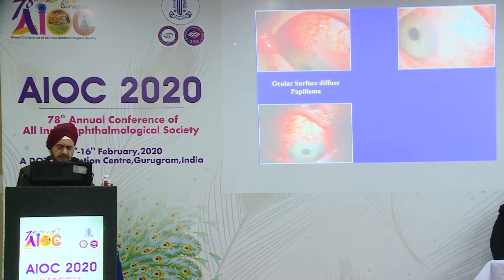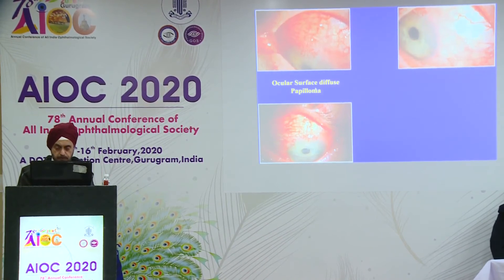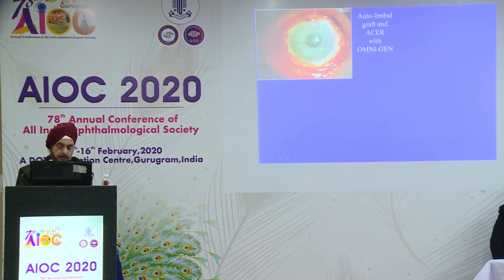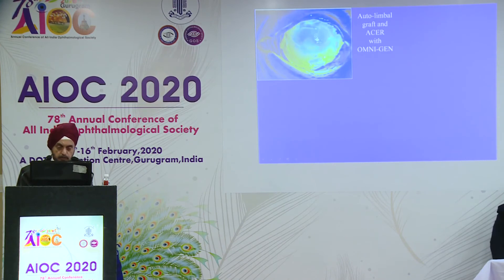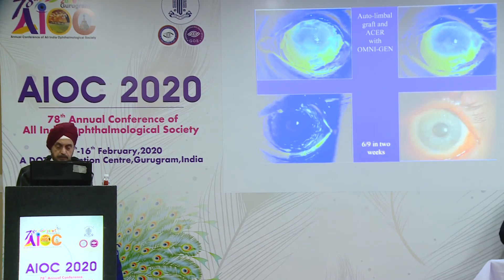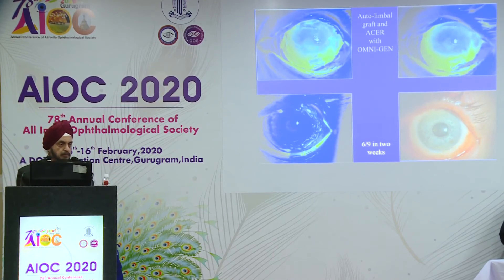Here's a patient with a very severe extensive ocular surface papilloma, treated with mitomycin and interferon alpha, who eventually ended up with 360-degree stem cell deficiency and a very irregular rough cornea. We treated him with ACER. Those are the explants, and the outer membrane was a dried membrane — you can see it staining with fluorescein but you can see through it. You can see the epithelial cells growing from the explant sheets. When you take the dried membrane off, the cornea is only covered by corneal epithelium.